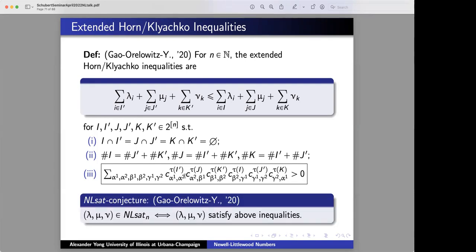So we're trying to talk about NL coefficients and what our inequalities are talking about are multiple NL coefficients. So it's not exactly recursive, but it's suggestive perhaps. And to formulate our conjecture, the statement is, NL sat, a triple is in NL sat if and only if they satisfy these particular inequalities. And this would be analog of Klyachko's theorem.